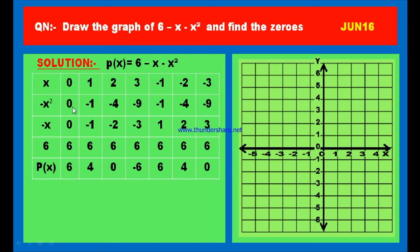Plotting the points: (0, 6) lies on the y-axis as x-coordinate is 0; (1, 4) — x equals 1, y equals 4; (2, 0) — x equals 2, y equals 0, lies on x-axis; (3, minus 6) — x equals 3, y equals minus 6; (minus 1, 6) — x equals minus 1, y equals plus 6; (minus 2, 4) — x equals minus 2, y equals plus 4; (minus 3, 0) — x equals minus 3, y equals 0, lies on x-axis.